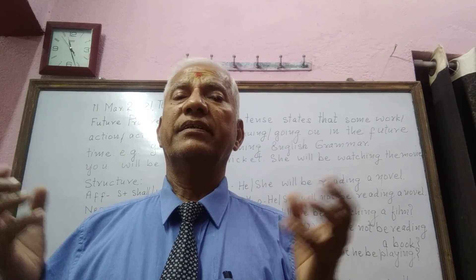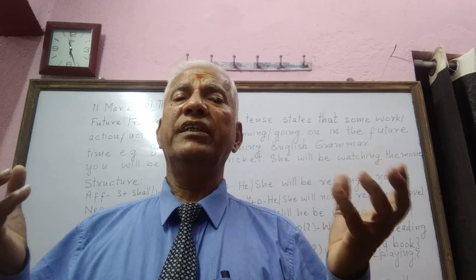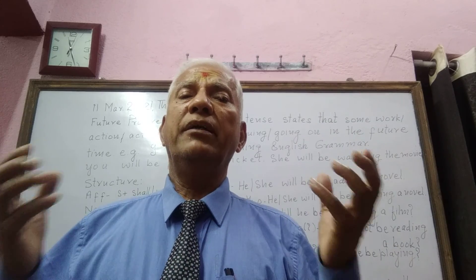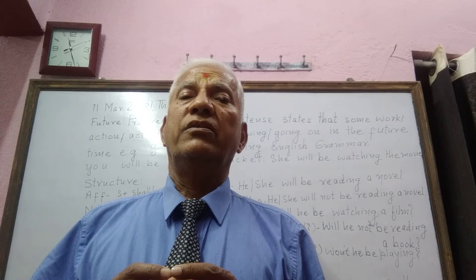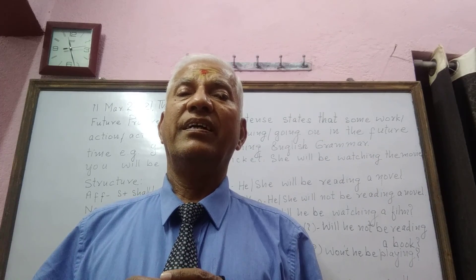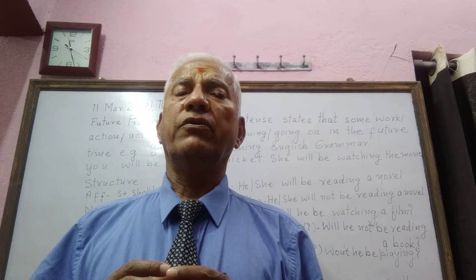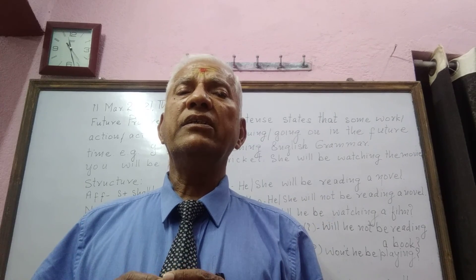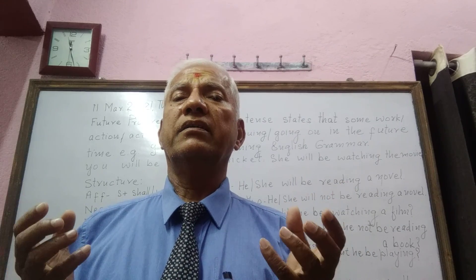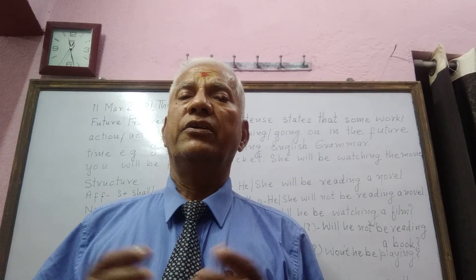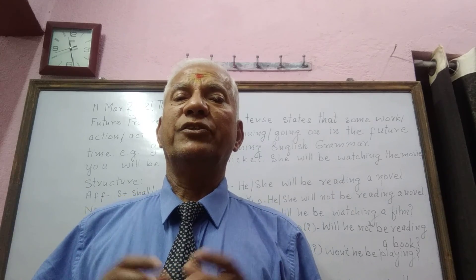I shall be teaching English grammar that day. You will be watching a serial on the television. She will be doing yoga. They will be playing cricket. In this way we find that future progressive tense, or future imperfect tense, or future continuous tense, can be used to express a work, action, activity, or task which will be going on in the future time.